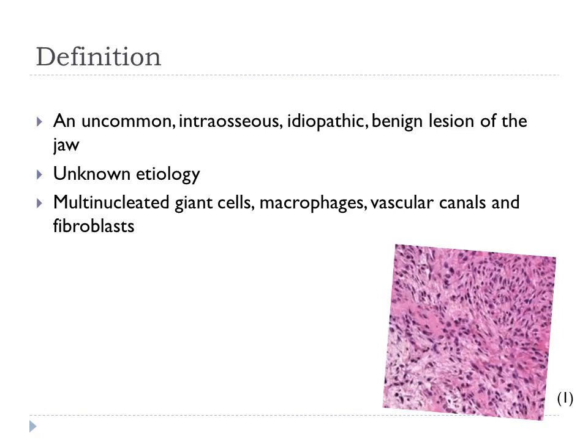When viewing Central Giant Cell Granuloma histologically, multinucleated giant cells, vascular canals, and fibroblasts are present within the connective tissue.